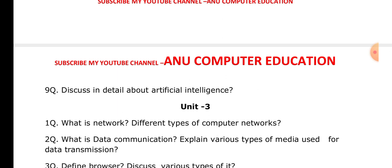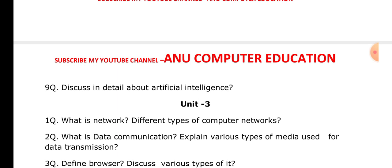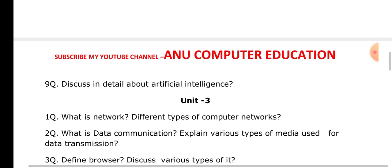Next, what is data communication and what are the types of media used for data transmission? Explain the meaning of data communication and the different types of cables we use, such as coaxial cable, twisted pair cable, and fiber optic cable — all of these you have to explain.